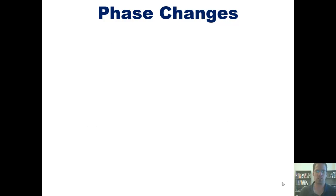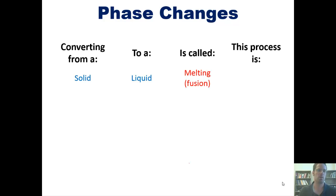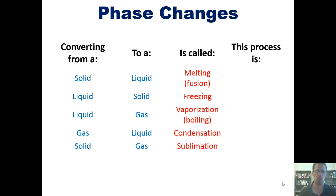I now want to teach you about phase changes. When we convert a solid to a liquid, we call it melting, which is also called fusion. When we convert a liquid to a solid, we call it freezing. A liquid to a gas is called vaporization or boiling. Converting a gas to a liquid is called condensation. Solid to a gas is called sublimation, and gas directly to a solid is called deposition.